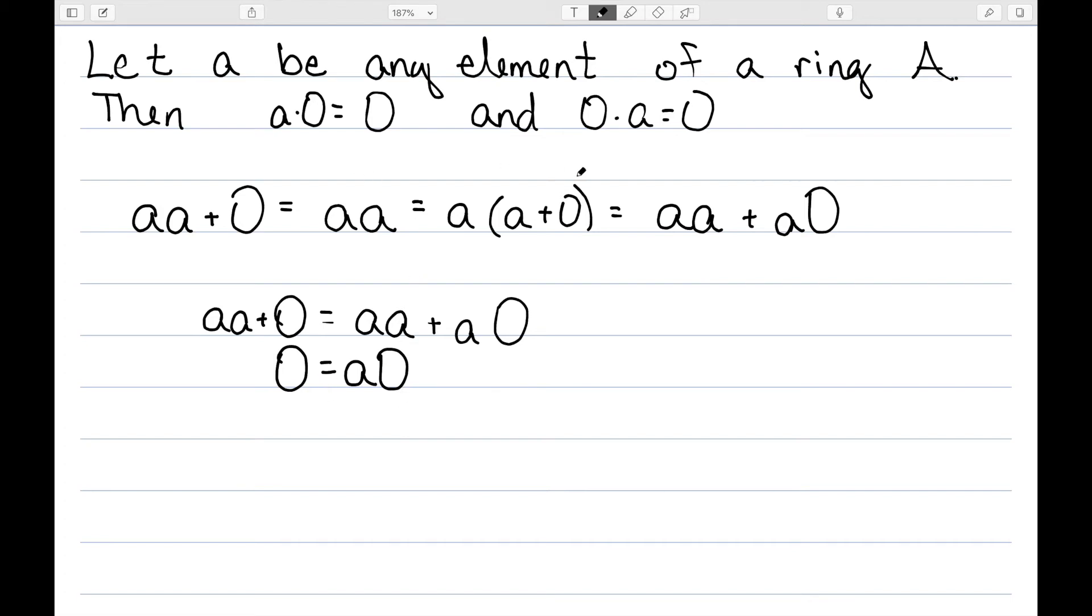I previously talked about how I have the cancellation property, so I have 0 equals A0. And so I have shown, in this case, the first part. Similarly, if we write this here as (A plus 0) times A, we would get the other direction.